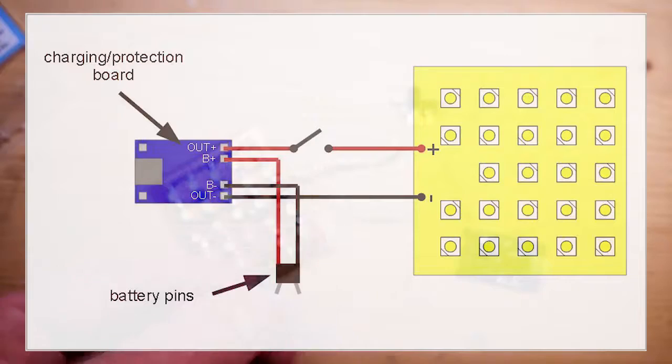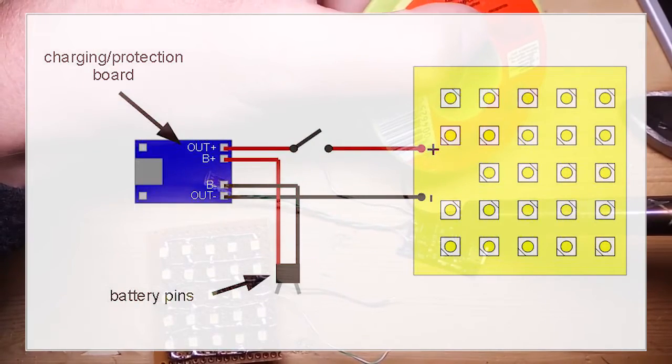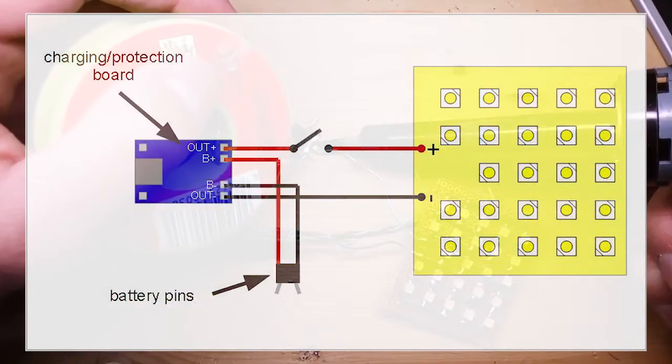Time to wire everything up. The schematic shows you how it's connected. The battery connectors are going to the input and the LED light is of course connected to the output. It's pretty straightforward.